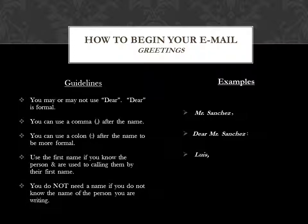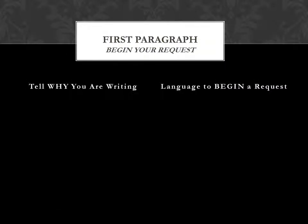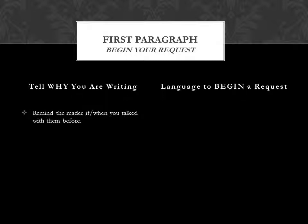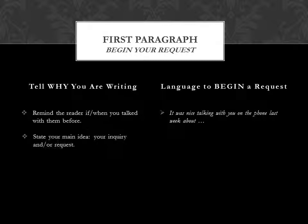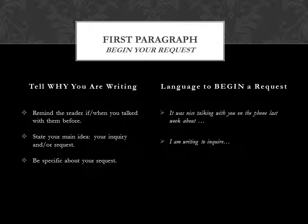You do not need a name if you don't know the name of the person you are writing. In the first paragraph, you begin your request and tell why you are writing. Remind the reader if and when you talked with them before. The language to use might be, 'It was nice talking with you on the phone last week about...' State your main idea — your inquiry and/or request. For example, 'I'm writing to inquire.' Be specific about your request, for example, 'I'm writing to request,' or 'I'm interested in finding out.'